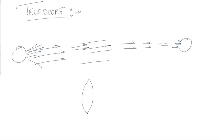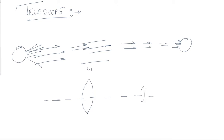For this, the arrangement of the lenses is made in the following way. A lens of bigger focal length is taken — let this lens be L1 — and a lens of smaller focal length is taken — let this lens be L2.